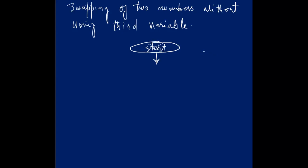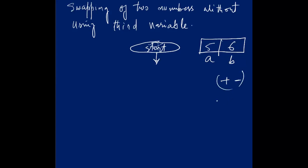What is the algorithm behind this? I will write the algorithm for it first. This will be my A and this will be my B. Suppose A is 5 and B is 6. There are two methods: either I can use the addition-subtraction method or I can use the multiplication-division method. I will use addition-subtraction; similarly you can use multiplication and division after that.